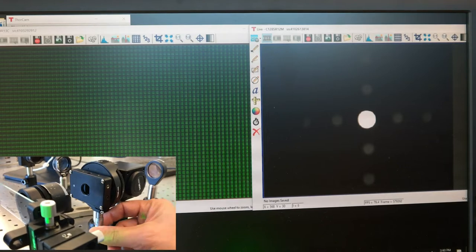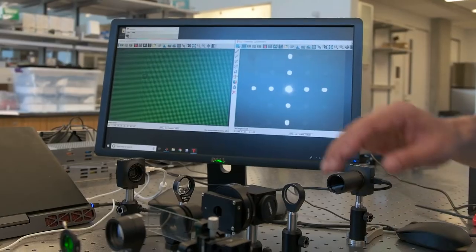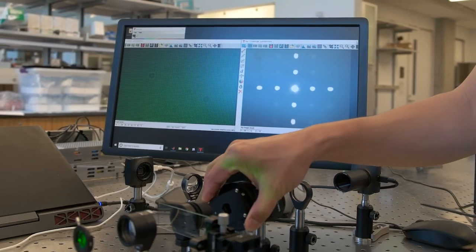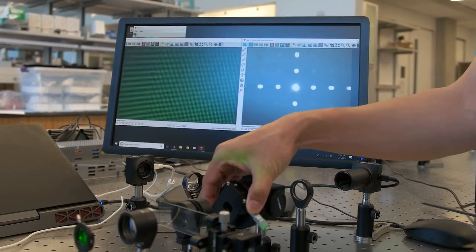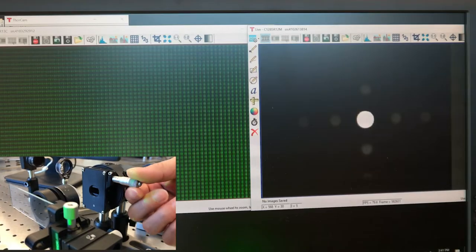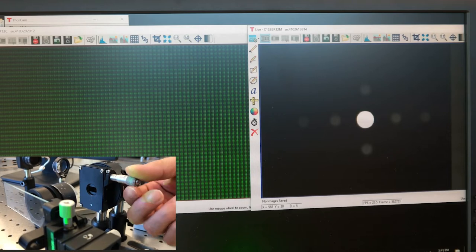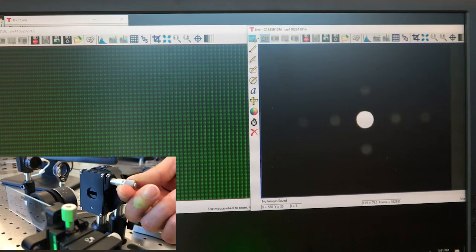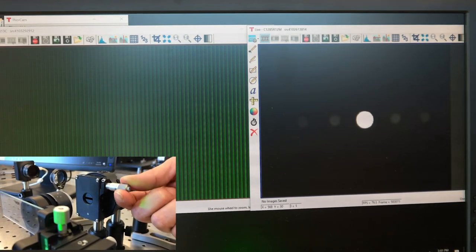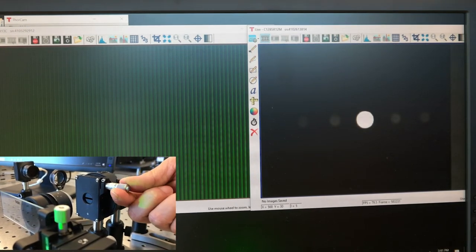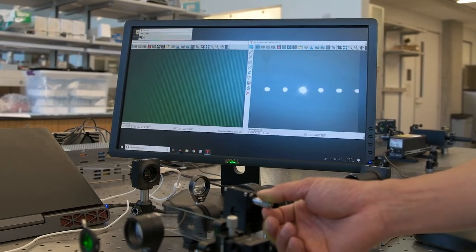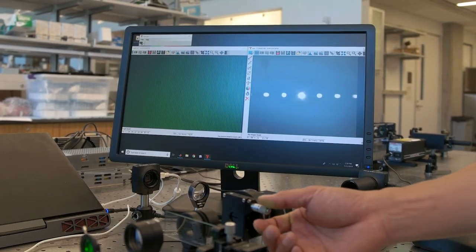Therefore, if we rotate the slits to block the horizontal line of the vertical spots at the Fourier plane, we should expect to see the horizontal lines vanish. Now, after I rotate the slit and close up the slit, we indeed see the result as expected.